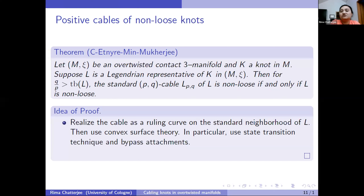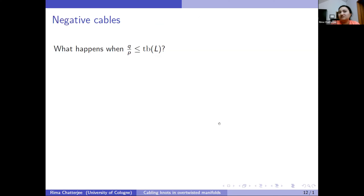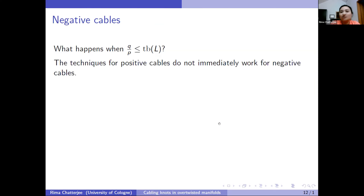The cabling slope must be greater than the Thurston-Bennequin number — this is very important. This works for positive cables, but what about negative cables, where the cabling slope can be less than or equal to the Thurston-Bennequin number? Positive and negative cables behave very differently in contact geometry, so the same approach won't work for negative cables.